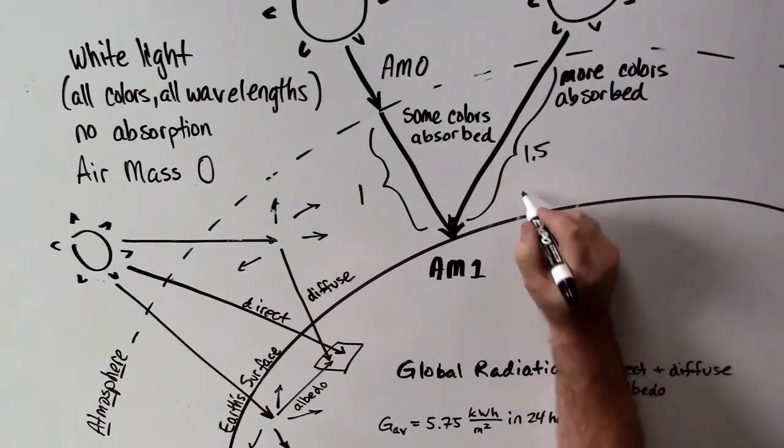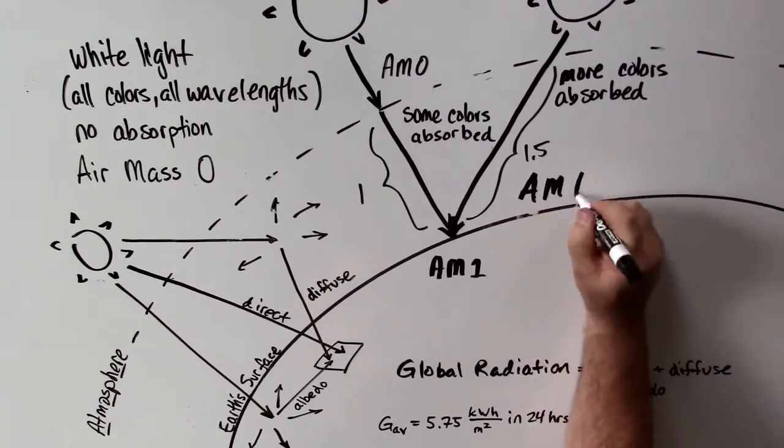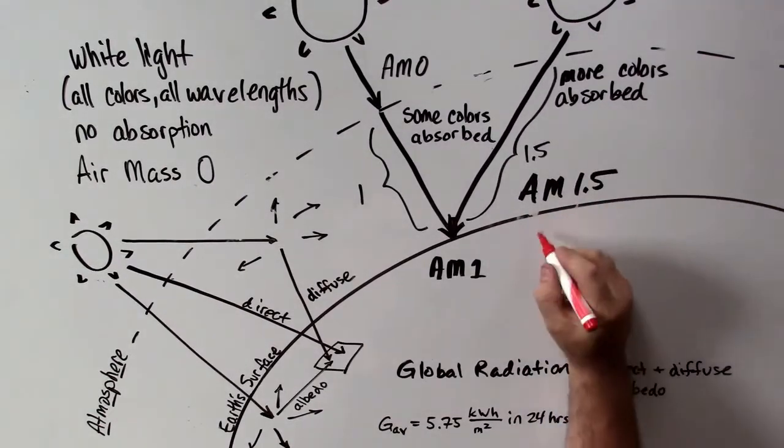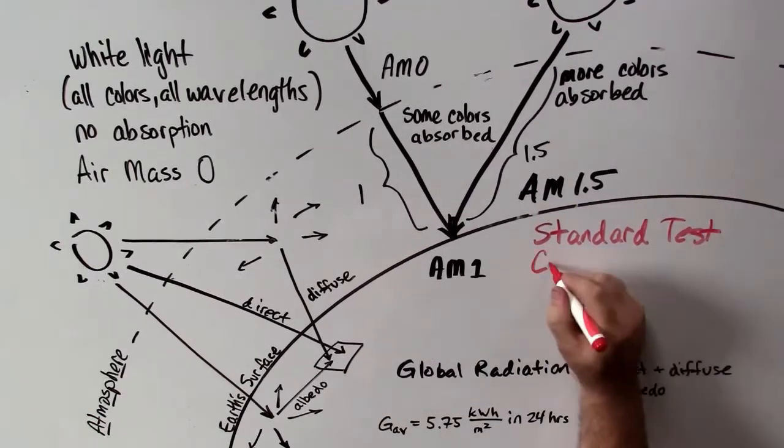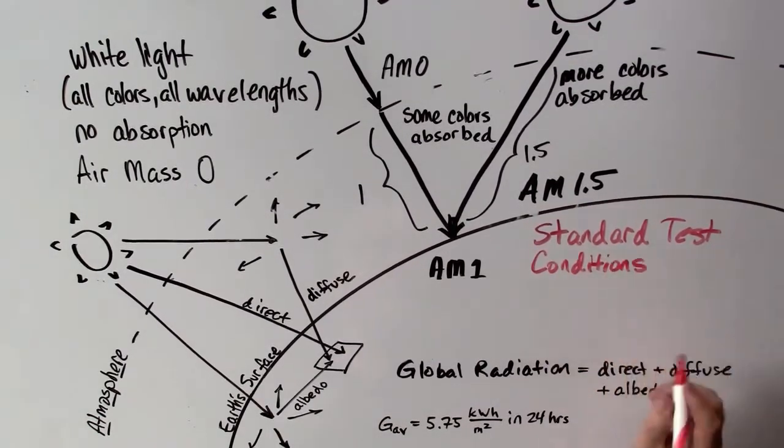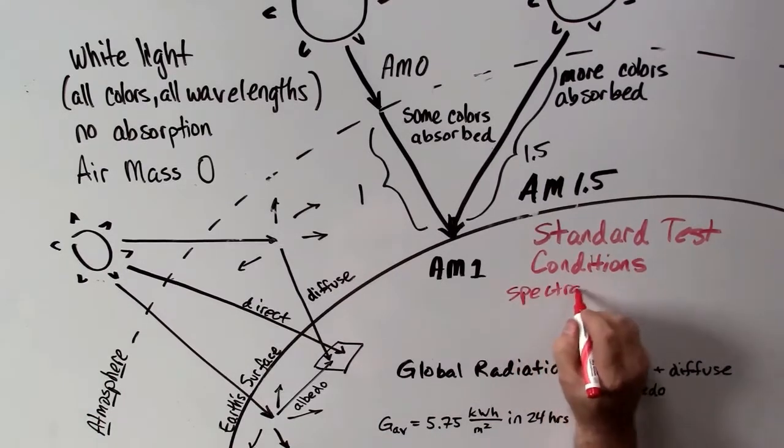And when the sun is off to the side, which is even more common, then it goes through approximately 1.5 atmospheres. We call that air mass 1.5, and that brings us to our standard test conditions.